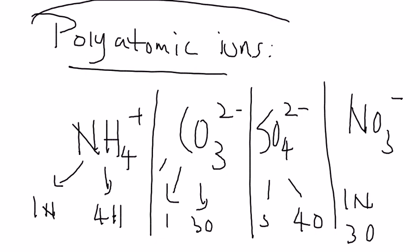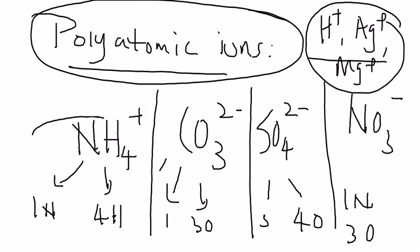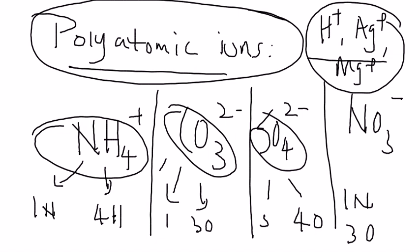These are the ions that we call polyatomic ions, as compared to single ions like hydrogen ion, silver ion, or magnesium ion. They are different—they are single atoms. Here it's called polyatomic because they are formed by a group of atoms that have charge. All right, that's all for this lesson.